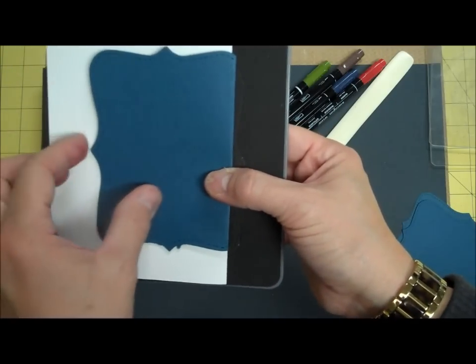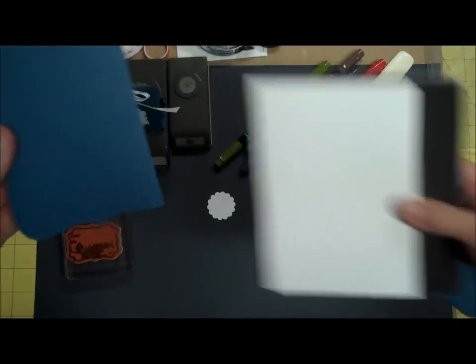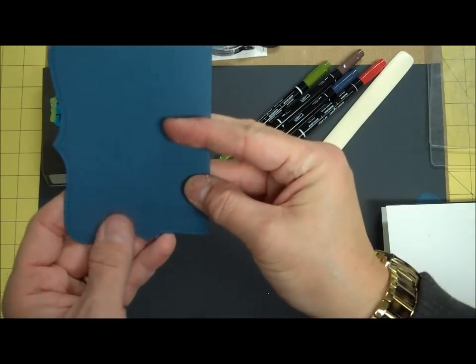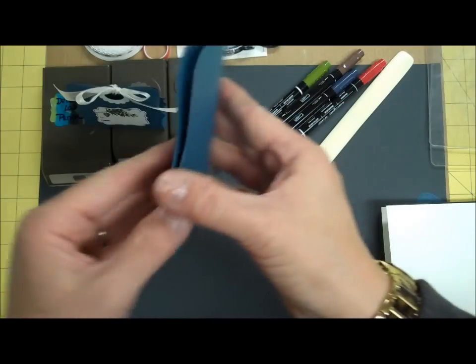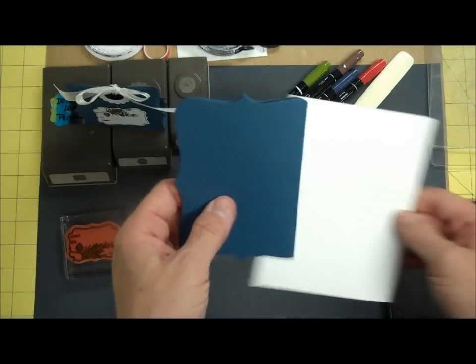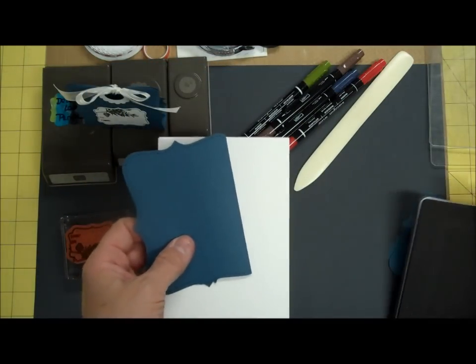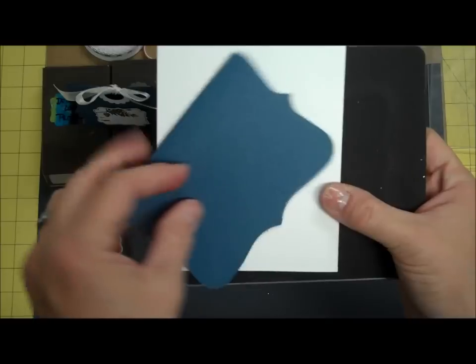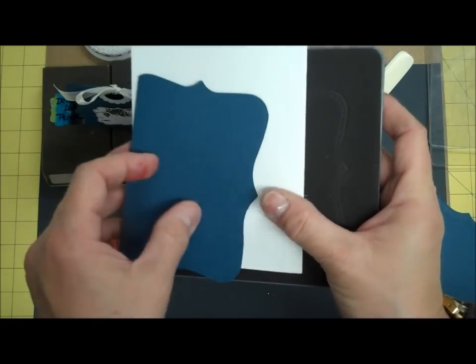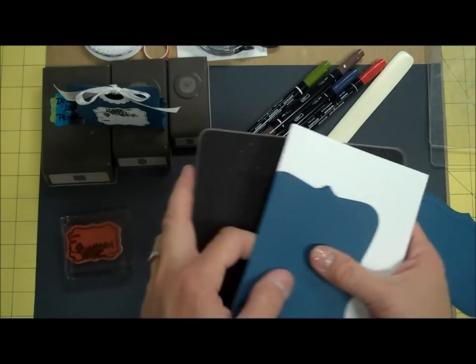I'll send it through my Big Shot, and I'm going to get something that looks like this. It's going to already be folded in half. Use a bone folder. I didn't use a bone folder on this, and you can see it's not very straight, but it gives you just these really great little shaped cards. This is the perfect size for a gift card, so that's another idea that you can use with that.